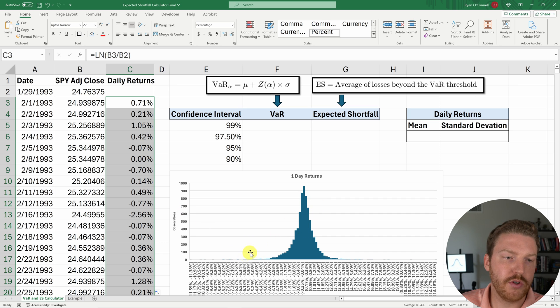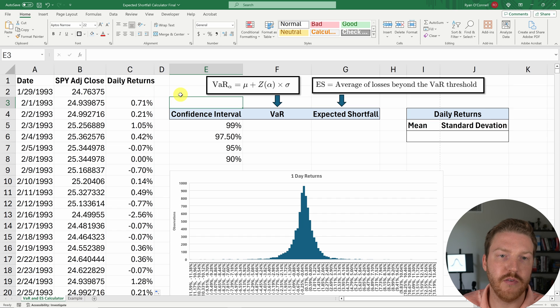And it doesn't really look like a normal bell curve, does it? So we can see that this tail is really fat. Stock returns don't often behave like a normal bell curve would. And so we're seeing fatter tails and a taller peak. But now we can calculate VaR.